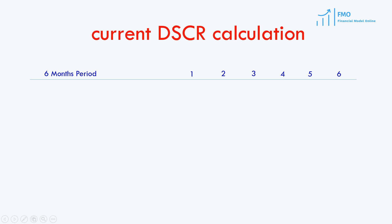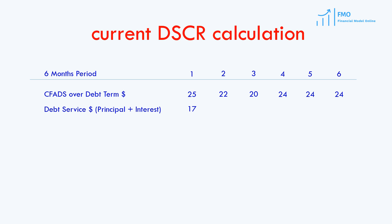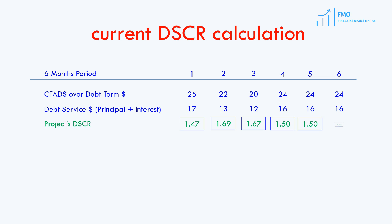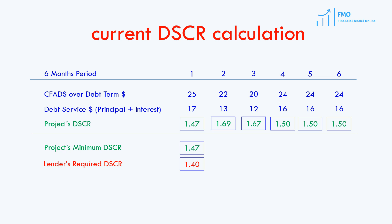Let's review how the current DSCR is calculated. Our timeline is a 6-month periods timeline, which is the typical timeline for project finance models at the operations stage. The first ingredient in the current DSCR calculation is CFADS over the debt repayment term. Then we need our debt service, which is debt principal repayment and interest expense. The DSCR formula is CFADS divided by the debt service, giving us the debt service coverage ratio for each period. We repeat the calculations for other periods, select the lowest DSCR the project produces during the debt repayment term, and compare it to the lender's required DSCR. If the lowest project DSCR is above the required DSCR, the project meets the lender's requirement.